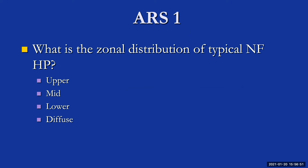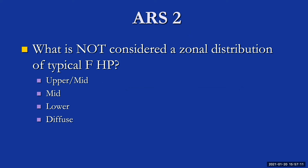Audience response question: what is the zonal distribution of typical non-fibrotic hypersensitivity pneumonitis? The answer is diffuse. Next question: what is not considered a zonal distribution of typical fibrotic HP? The answer is lower — basilar predominance is not a typical fibrotic HP distribution; it's more suggestive of UIP and NSIP. That said, a substantial proportion of fibrotic HP cases will be basilar predominant, so you can never completely rule out HP based on imaging alone.